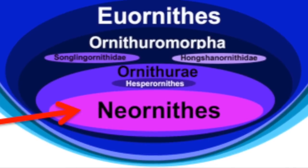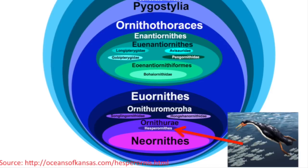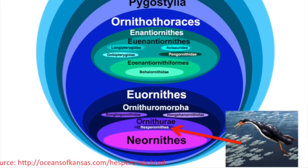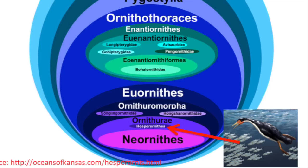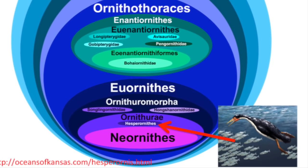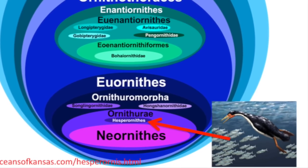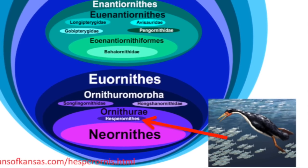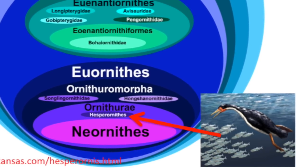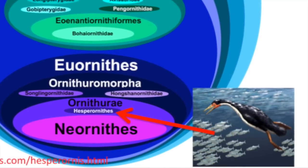Besides that, Neornithes also doesn't include quite a few other things — like this guy. This is Hesperornis. It's not in Neornithes, but pretty much everyone calls it a bird because it looks like a bird. It basically looks like a crane with teeth, but it was Hesperornis. It's not in Neornithes, which makes it not a bird — and that's clearly not true.